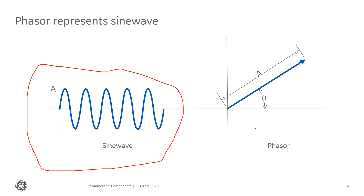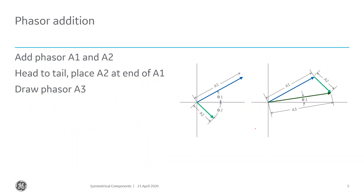In our discussion of symmetrical components, it's also necessary to understand how we add and multiply phasors. When adding phasors A1 and A2 graphically, I superimpose A2 onto the end of A1 and the resulting vector is their sum — a magnitude and an angle. That's how we add vectors or phasors.